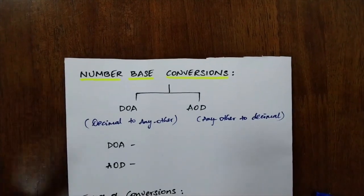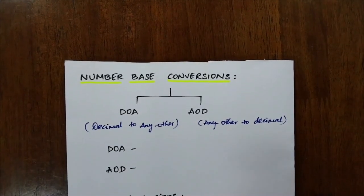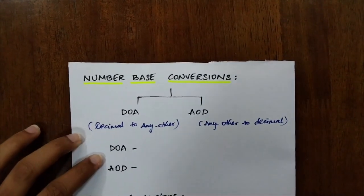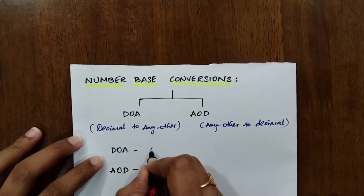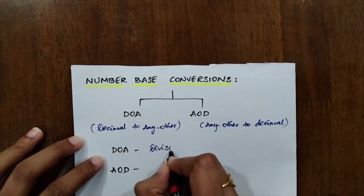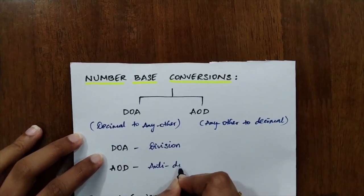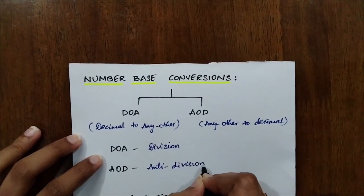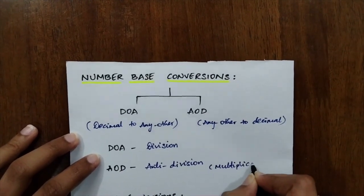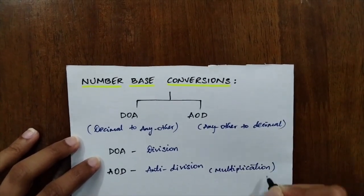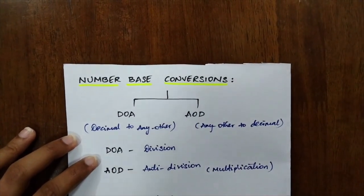With only these two, you will be solving all the problems with ease. Now what should we do for DOA and AOD? For DOA, you will be doing division. In AOD, we will be doing anti-division which is multiplication. You will really be getting to know what these actually are used for when we start solving the problems.